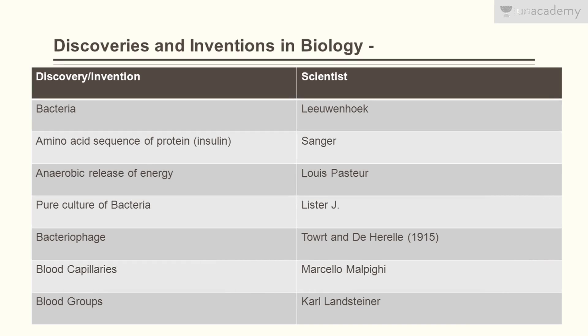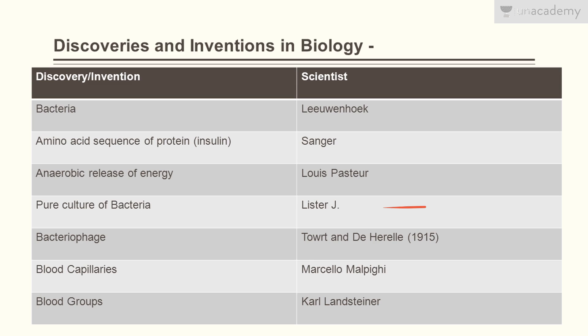Beginning with the lesson: bacteria was discovered by Leeuwenhoek. The amino acid sequence of a protein — firstly that of insulin — was discovered by Sanger. Anaerobic release of energy was discovered by Louis Pasteur. Pure culture of bacteria was discovered by Lister.